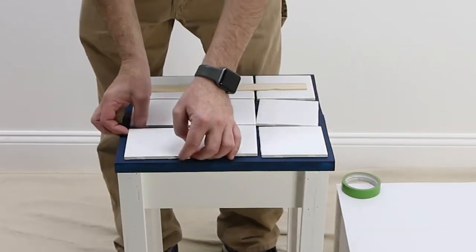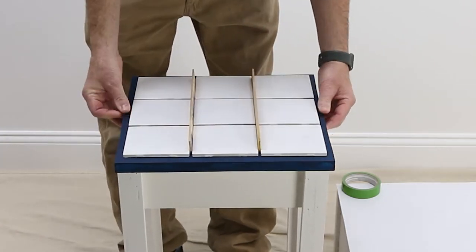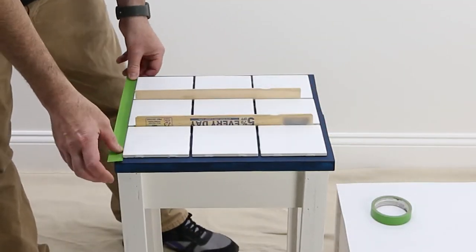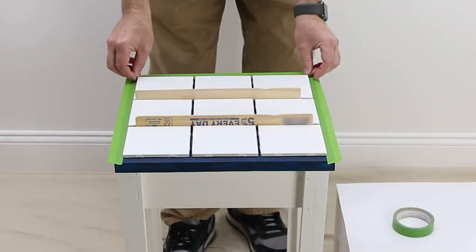Arrange the tiles how you want them using tile spacers or a substitute between every tile. Mask the edge of the table using frog tape around the area where the tiles will be placed.